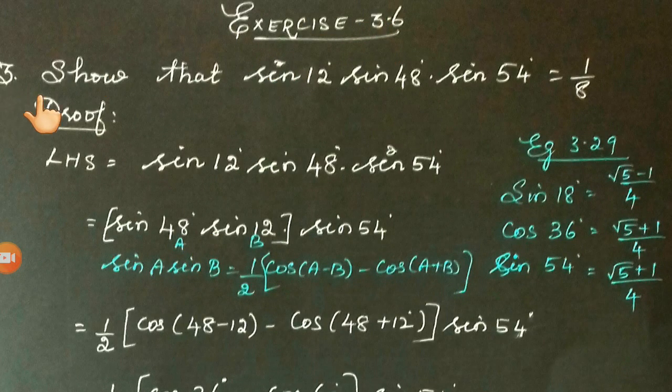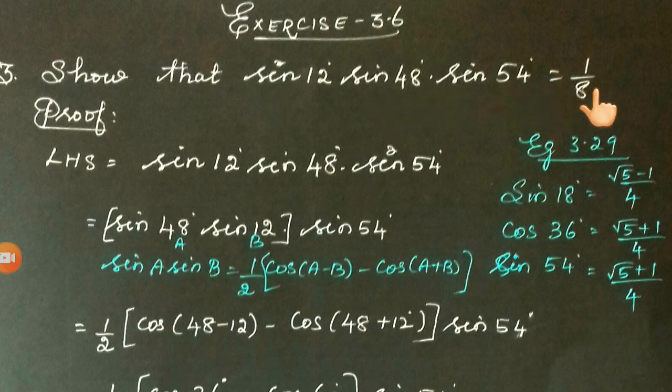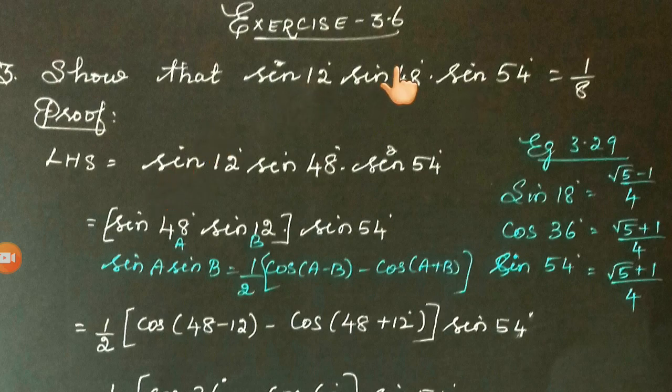Exercise 3.6, third sum: Show that sin 12° × sin 48° × sin 54° = 1/8. Now let us take the left-hand side. We have sin 12° × sin 48° × sin 54°.